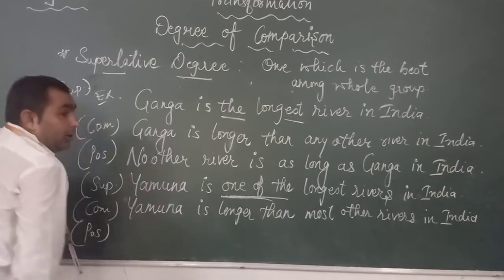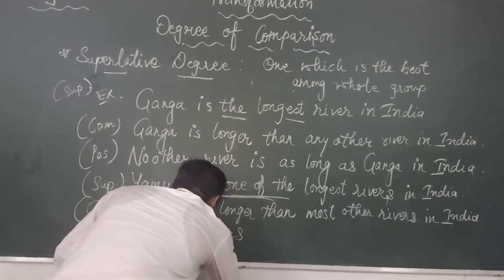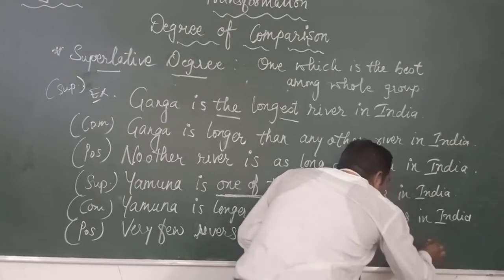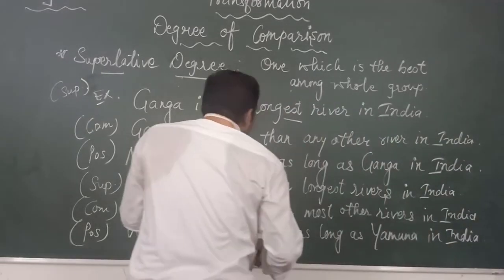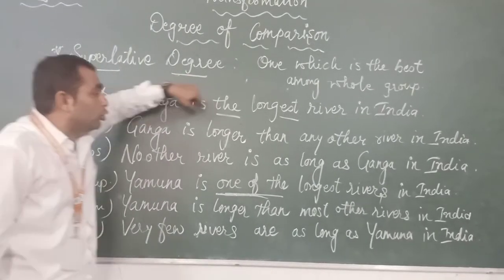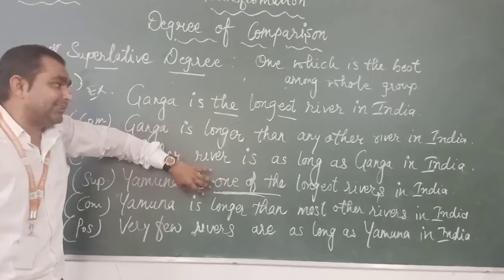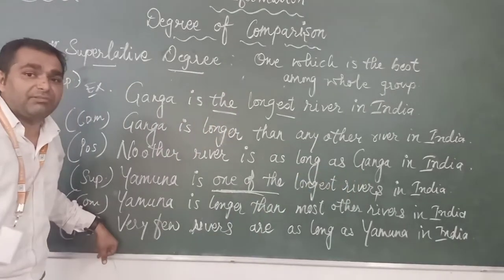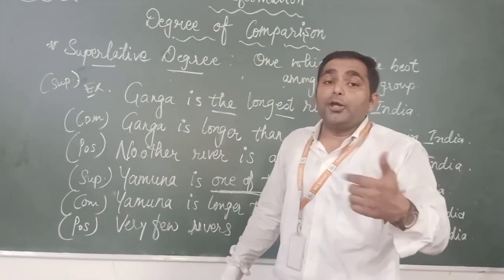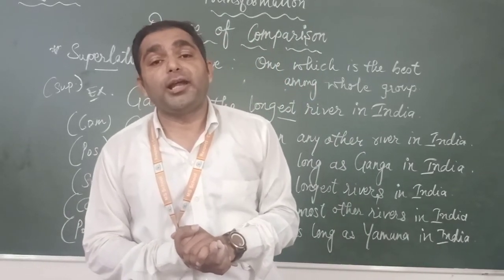In positive degree, when 'one of the' is present, the sentence starts with 'very few': 'Very few rivers are as long as Yamuna in India.' So to summarize: in regular superlative sentences use 'any other' for comparative and 'no other' for positive. But when 'one of the' is in the sentence, use 'most other' or 'many other' for comparative and 'very few' for positive. I hope you understood the degree of comparison. Thank you and have a nice day ahead.